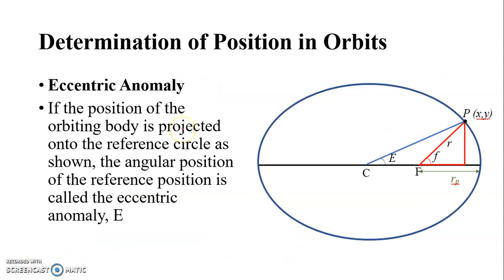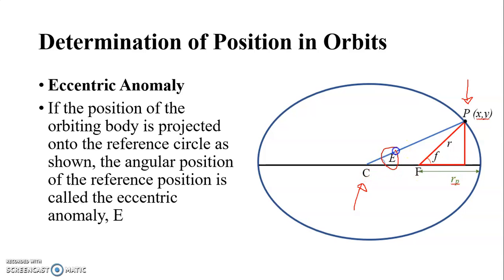To determine the position of orbits, we need to learn about eccentric anomaly and true anomaly. The eccentric anomaly refers to a point P — the location of the object — where we use the center C as our reference. The angle of P from the semi-major axis is called the eccentric anomaly.